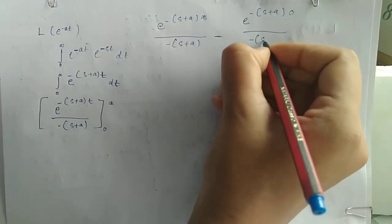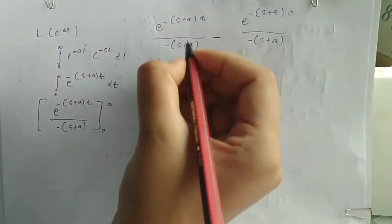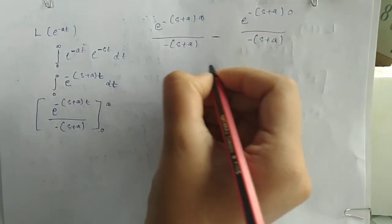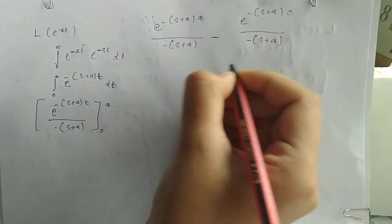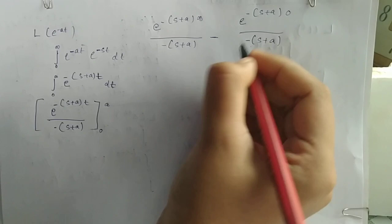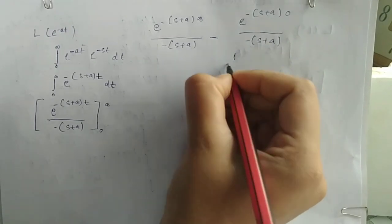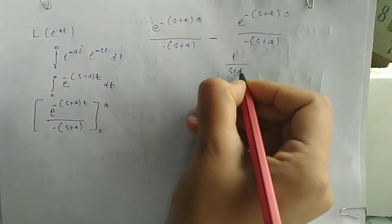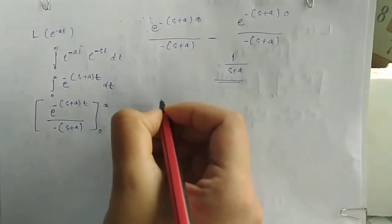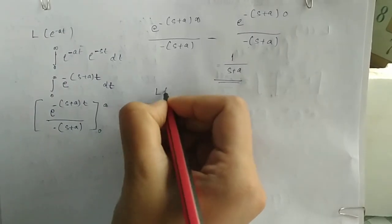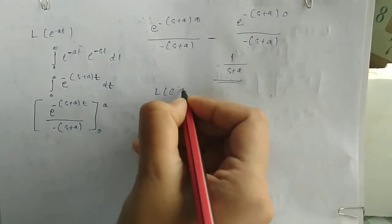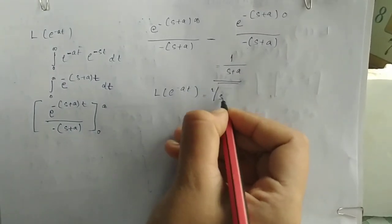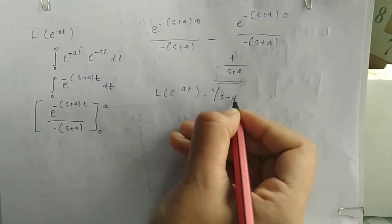After applying the limits from 0 to infinity, the term at infinity vanishes and we get plus 1 by s plus a. Therefore L{e^(-at)} is equal to 1 by s plus a.